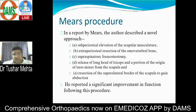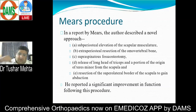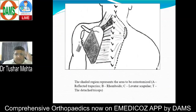Mears' procedure involves five steps: superioosteal dissection of the scapular musculature; extraperiosteal excision of the omovertebral bone; supraspinatus fossa osteotomy; release of the long head of triceps and part of teres minor; and resection of the supralateral border of the scapula to gain maximal abduction.